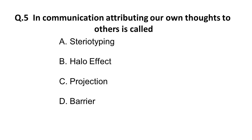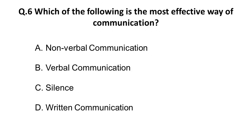Question 5: In communication, attributing our own thoughts to others is called — A) stereotyping, B) halo effect, C) projection, D) barrier. The correct answer is C: projection. Remember this definition — attributing our own thoughts to others in communication is called projection.